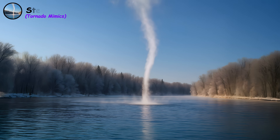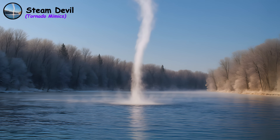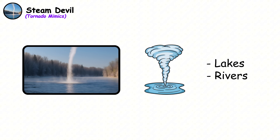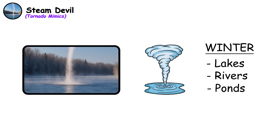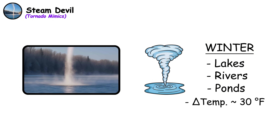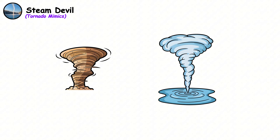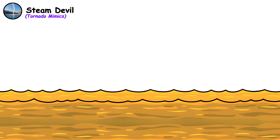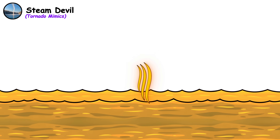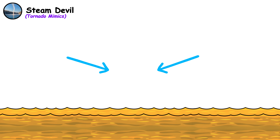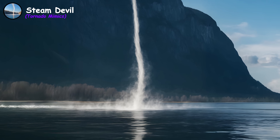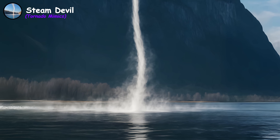Steam devil. Steam devils form when extremely cold air passes over warm water, creating rotating columns of steam and mist. These vortices show up over lakes, rivers, and industrial cooling ponds during winter when temperature differentials reach around 30 degrees Fahrenheit. The mechanism resembles that of dust devils, but here the heat source is the water. Warm water heats the cold air passing over it, and as this warmed air rises and begins to rotate, it pulls steam and fog into a visible vortex. Steam devils are generally harmless, with weak rotation and no destructive winds.